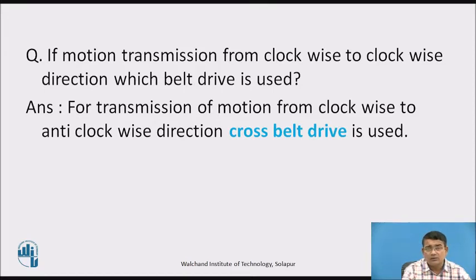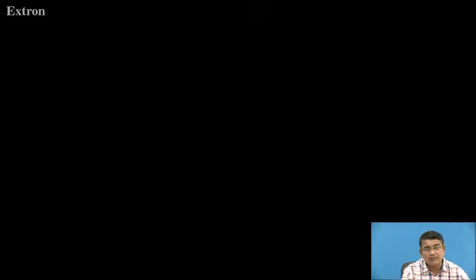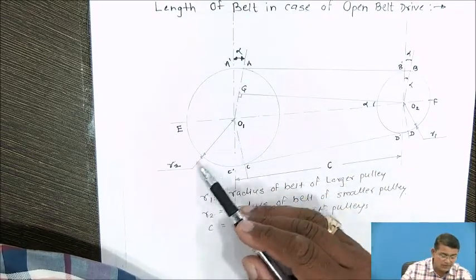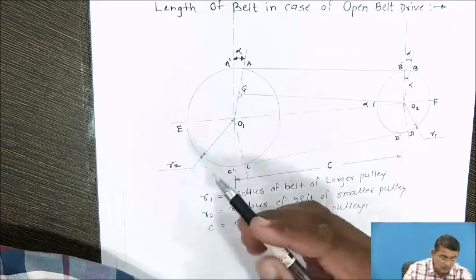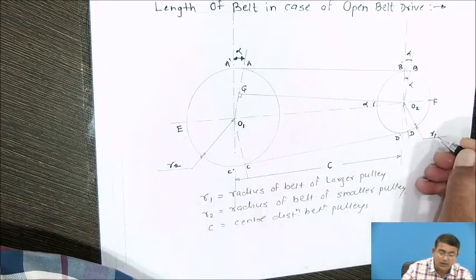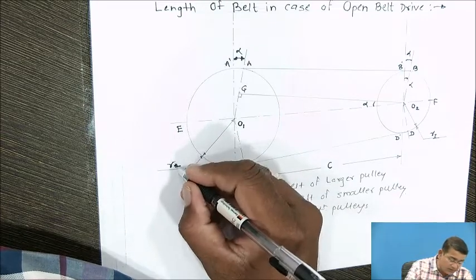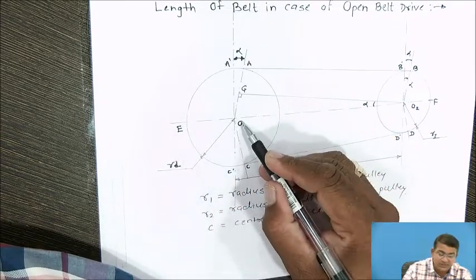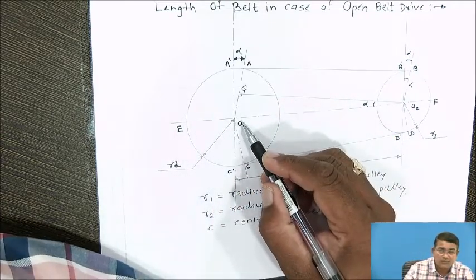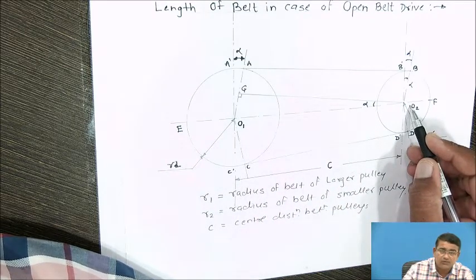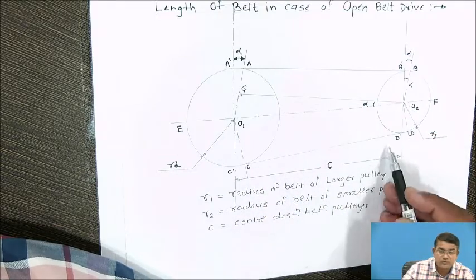Today I am explaining regarding the transmission of motion from clockwise to clockwise direction — that is, for the open belt drive. Here I am showing the diagram. This is a driver pulley having radius r1, and the driven pulley has radius r2. O1 is the center of the driver pulley and O2 is the center of the driven pulley.